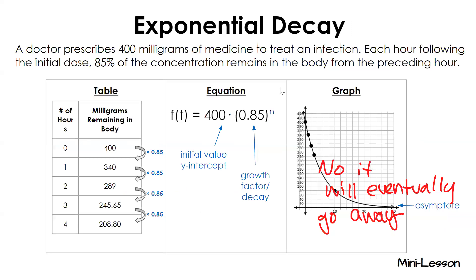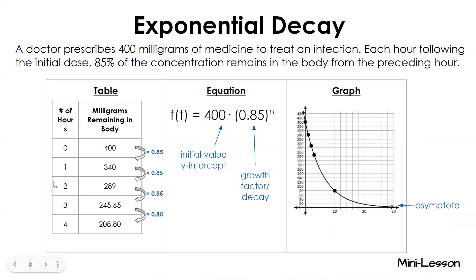Here it is in table form, equation form, and graph form — remember these three are directly correlated. If you're ever given just a graph, you can make a table from it. If you're given a graph, you can write an equation, and vice versa. Here is our asymptote. It'll always have a little bit of that medication — it will approach zero but never touch it, according to our equation.